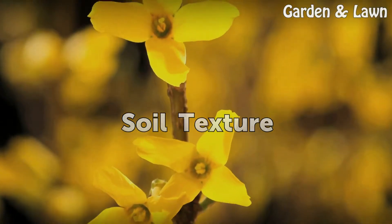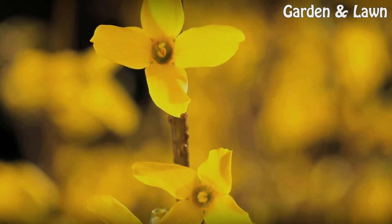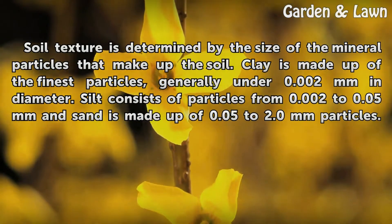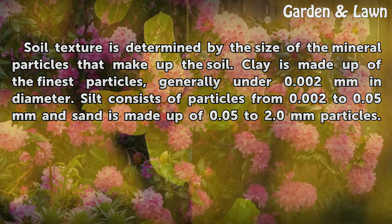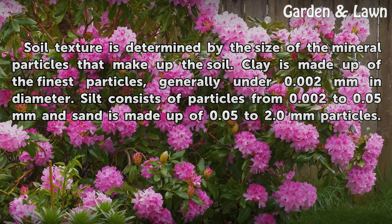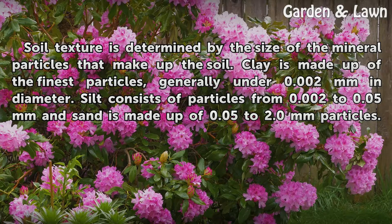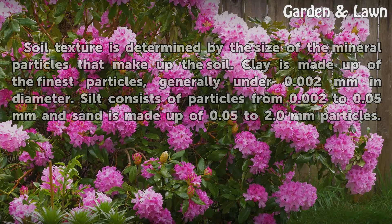Soil texture is determined by the size of the mineral particles that make up the soil. Clay is made up of the finest particles, generally under 0.002 mm in diameter. Silt consists of particles from 0.002 to 0.05 mm, and sand is made up of 0.05 to 2.0 mm particles.